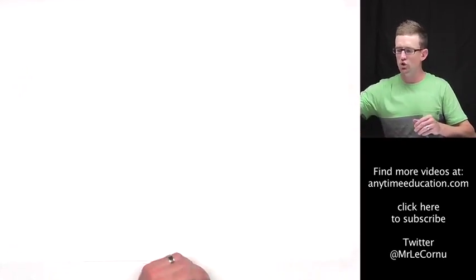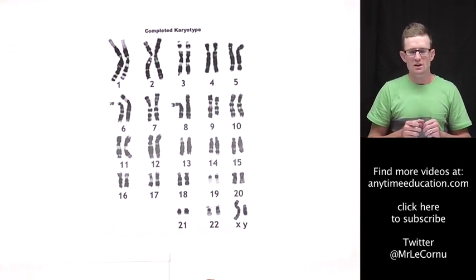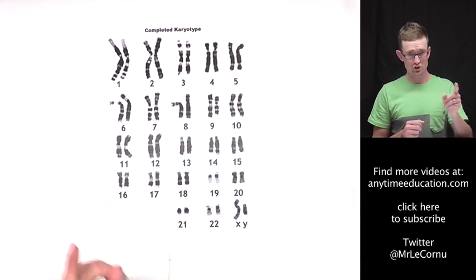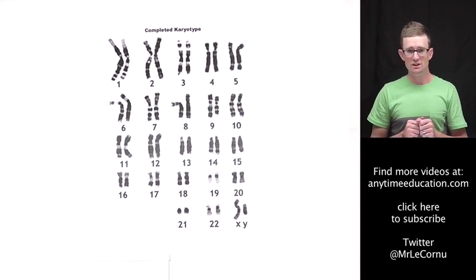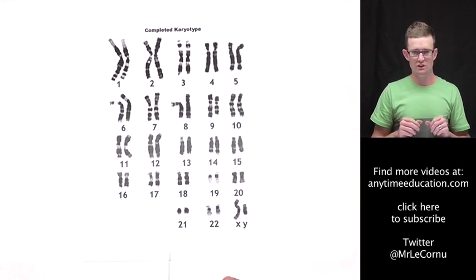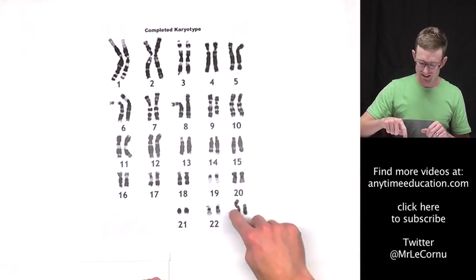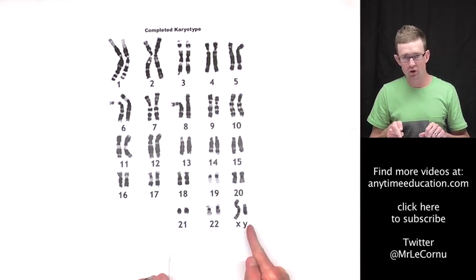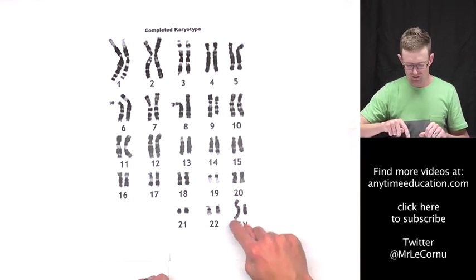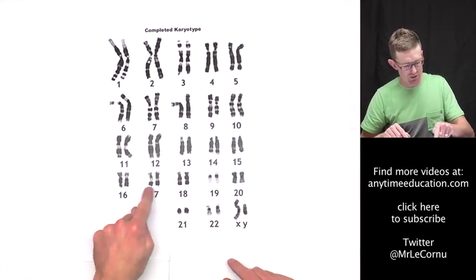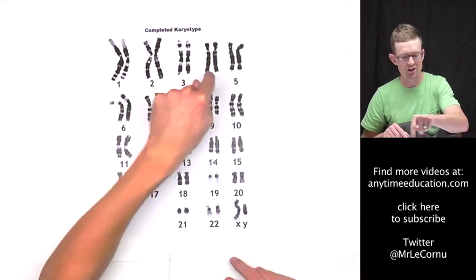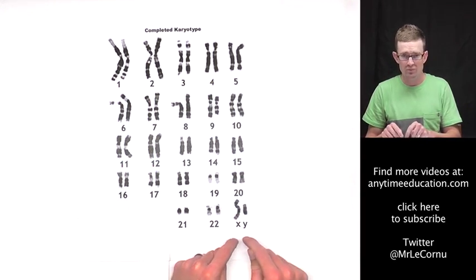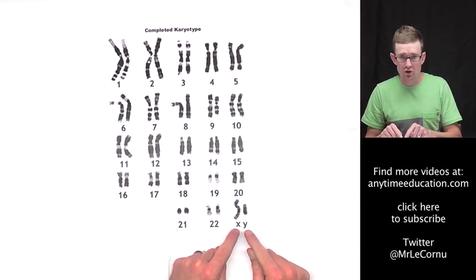Let's bring back our human karyotype — 23 pairs of chromosomes making 46 chromosomes in a human cell. Looking at the sex chromosomes, you can tell the gender of this human: this is a male, because males have one X chromosome and one Y chromosome. Notice they're the only two that don't look identical to each other. In females, there are two X chromosomes.